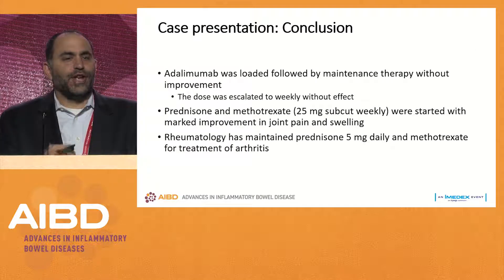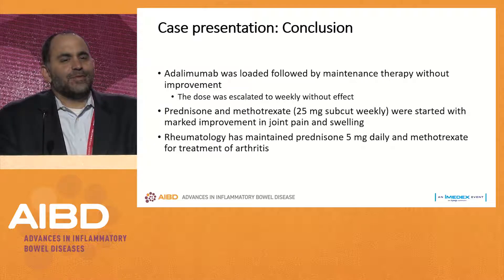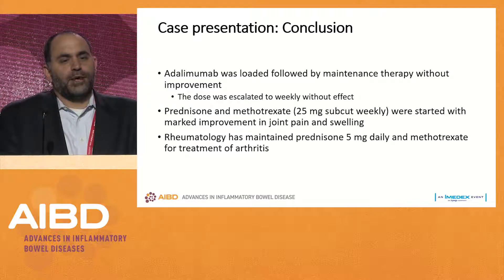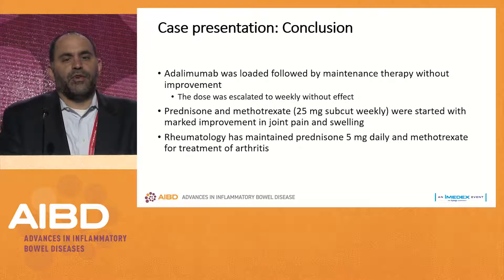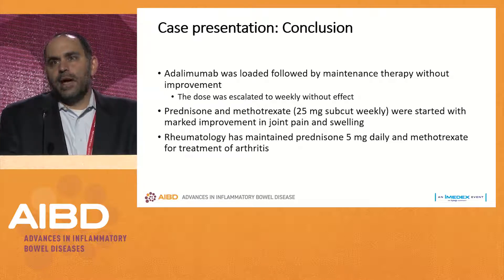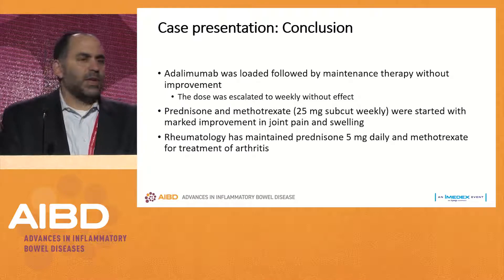Conclusion of the case: we switched the patient to adalimumab with maintenance therapy. She was dose-escalated to weekly dosing without effect. She received a tapering course of prednisone and methotrexate with marked improvement in her joint pain and swelling. Rheumatology maintained her on 5 milligrams daily prednisone for about a year, which was eventually stopped. The patient is doing quite well with some mild intermittent joint pain, but without the swelling and disabling symptoms she had before.